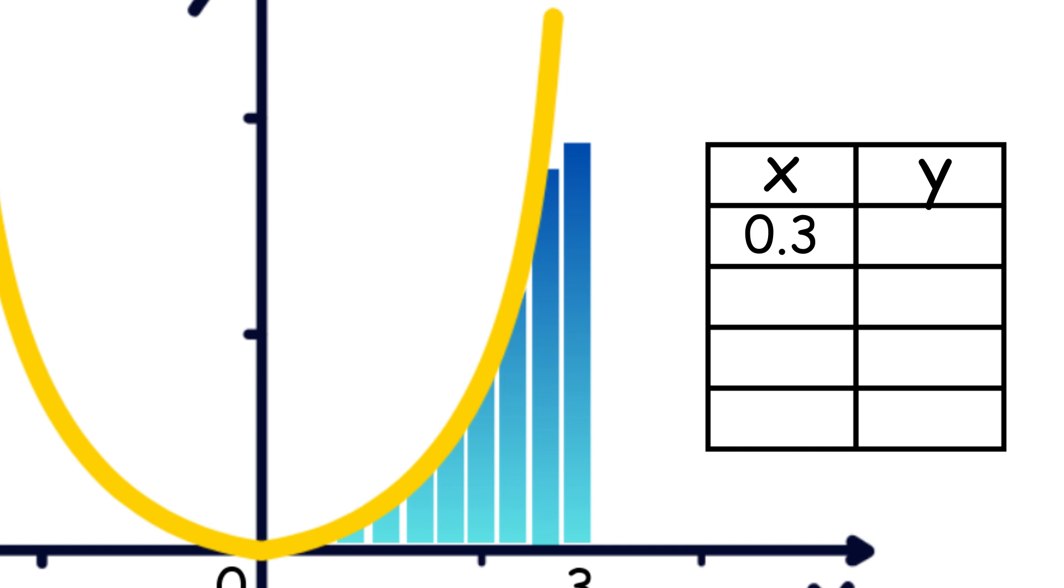At x equals 0.3, it is 0.09. At 0.6, it is 0.36. At 0.9, it is 0.81. And at x equals 3, it is 9.